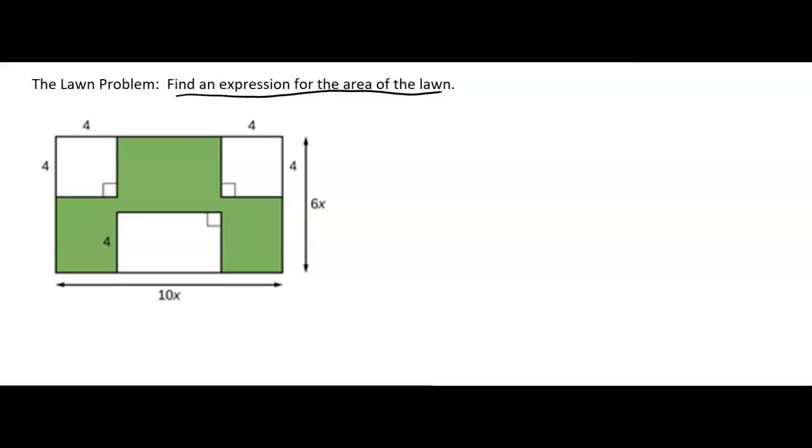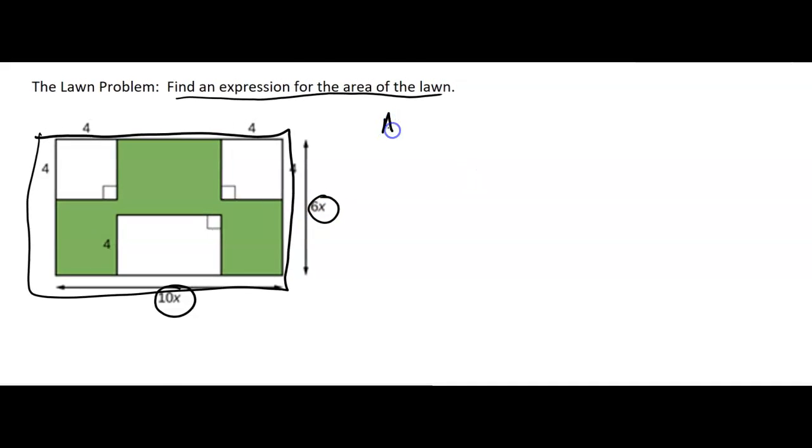What we're going to do is find the area of the big rectangle, which is going to be 10x times 6x. So the whole big rectangle, the area of the whole thing, is going to be length times width, which in this case is 10x times 6x. But then we have to subtract this little area, this little area, and this little area.